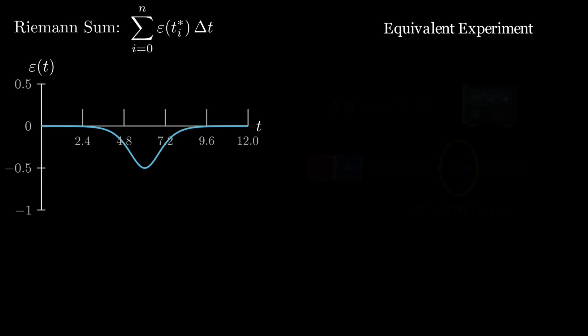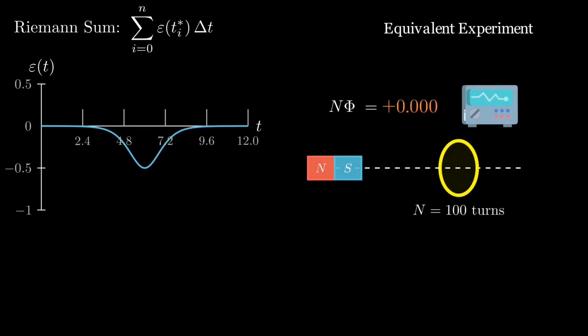Now, the same idea in electromagnetism. Here, the graph shows the induced EMF from a magnet passing through a coil, and the quantity we care about is the total change in N phi, the flux linkage.